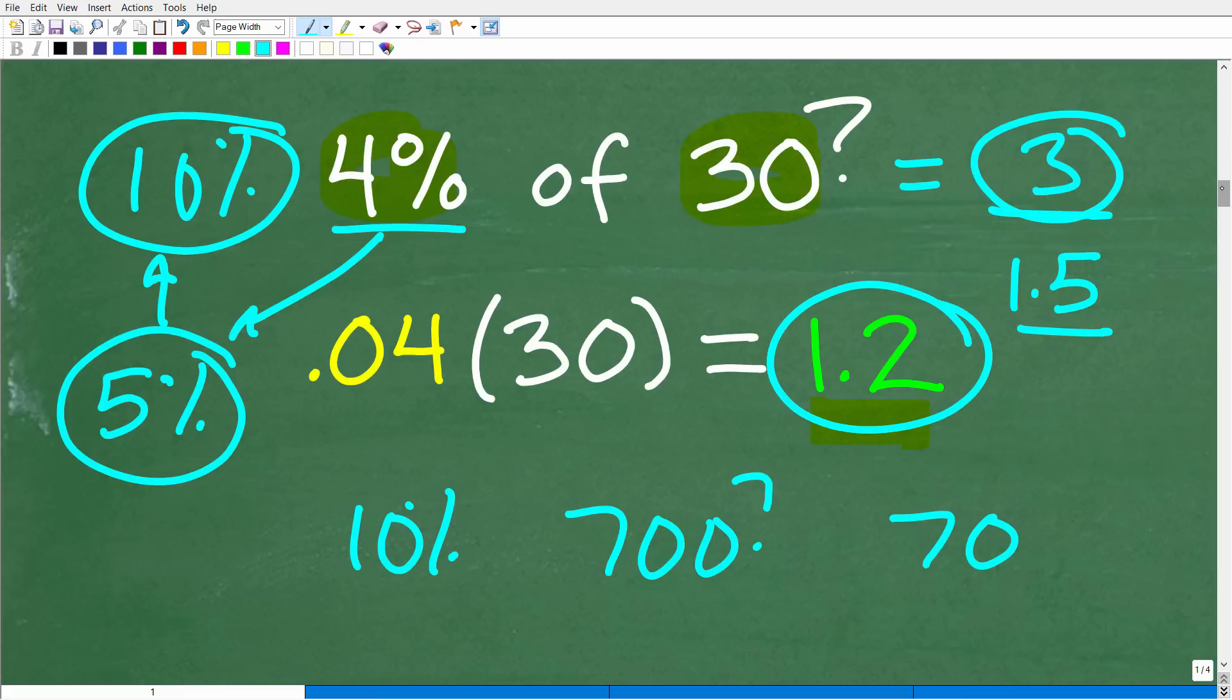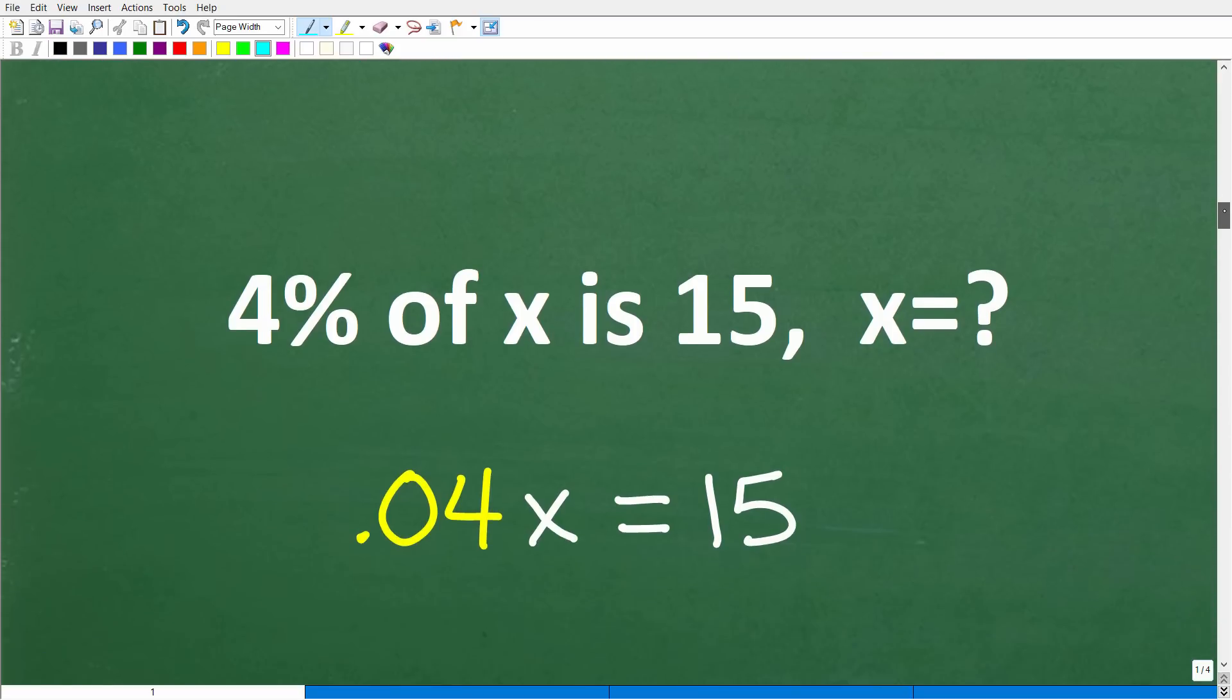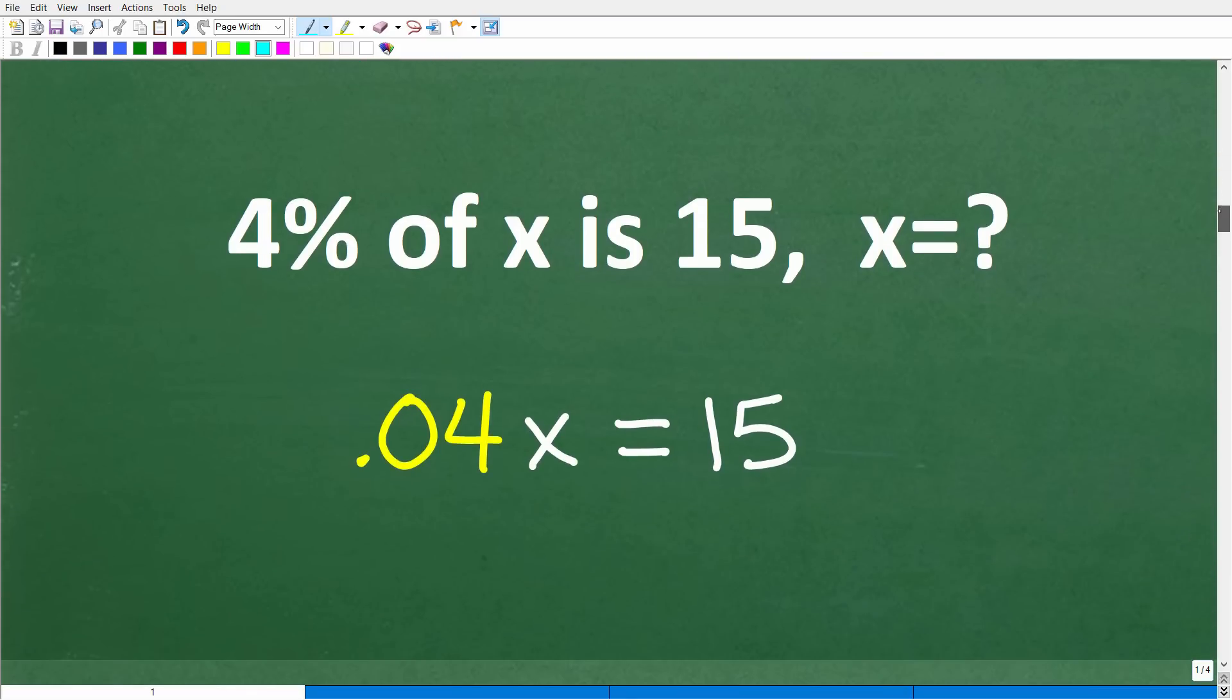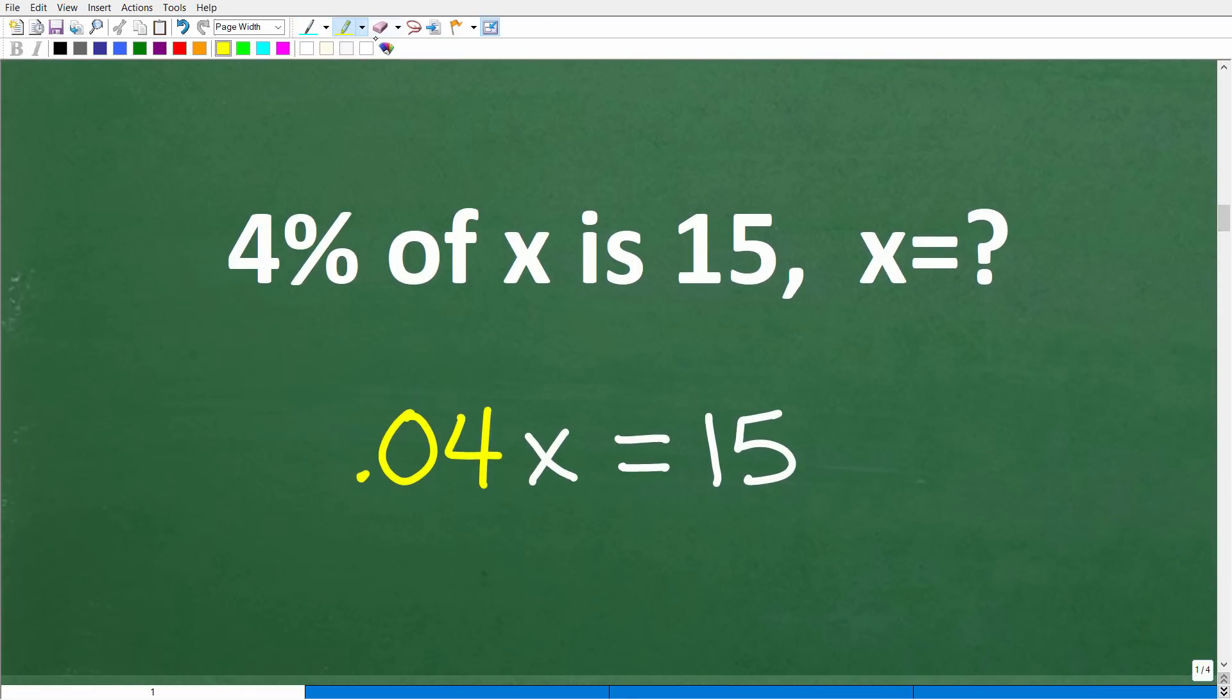So let's go ahead and actually solve this problem. So, now that we understand how to find the percent of a number, what we have here, x is a variable, but it represents the number. Now, this word is, in mathematics, is always the equal sign, right? Something is equal to. So, what we can do is construct a basic equation here.